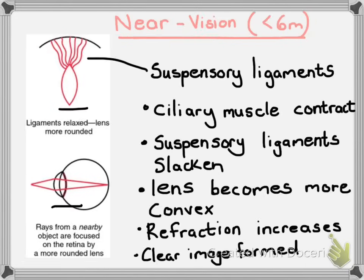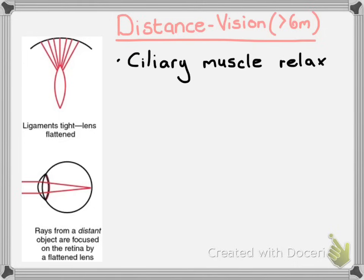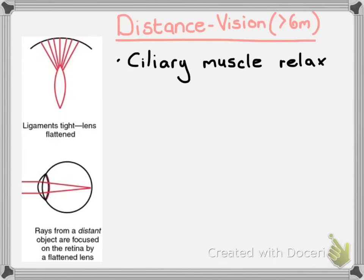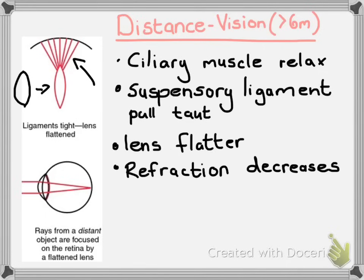If you flick between the two diagrams you will see the lens has changed shape. The ligaments have also constricted and are no longer slackened. With distance vision, the ciliary muscles relax — everything happens in the opposite direction. That causes the suspensory ligaments to contract, pulling on the lens, so the lens goes from being bulge-like to flatter and thinner. When the lens becomes flatter, refraction decreases, and again a clear image is formed on the retina.